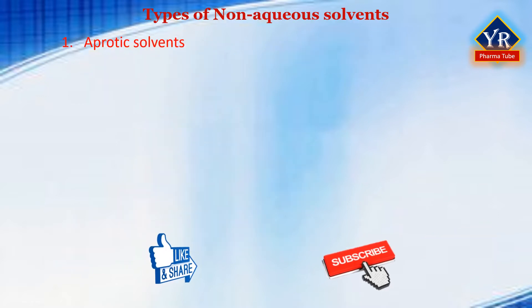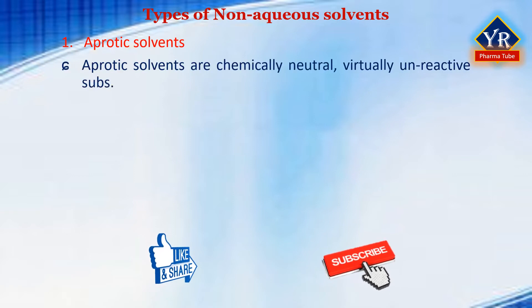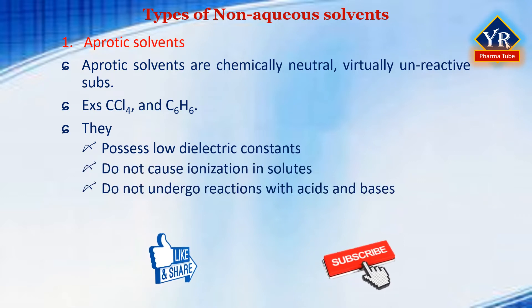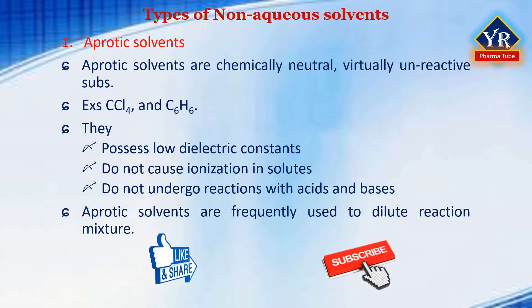Aprotic solvents include those substances which may be considered to be chemically neutral and virtually unreactive under the conditions employed. Carbon tetrachloride and benzene come in this group. They possess low dielectric constants, they do not cause ionization in solutes, and they do not undergo reactions with acids and bases. Aprotic solvents are frequently used to dilute reaction mixtures while taking no part in the overall process.